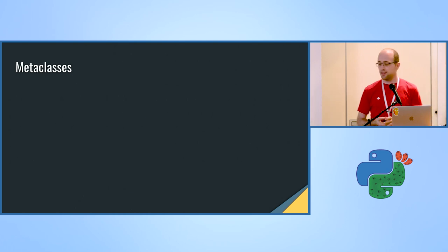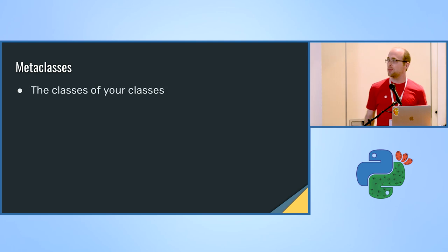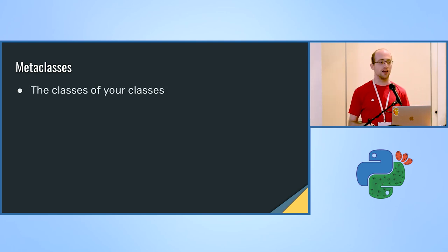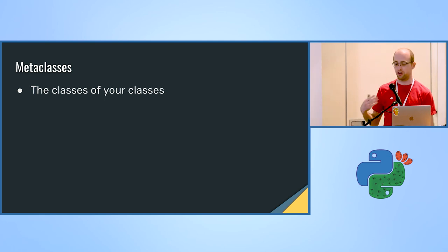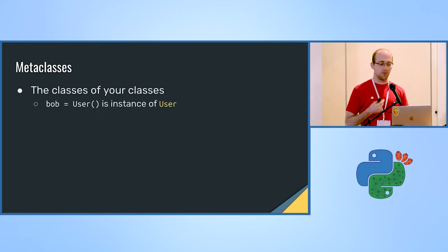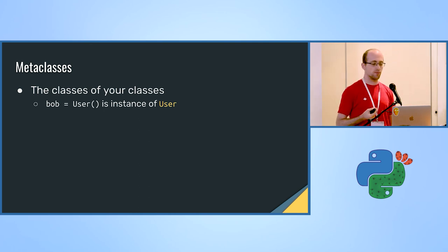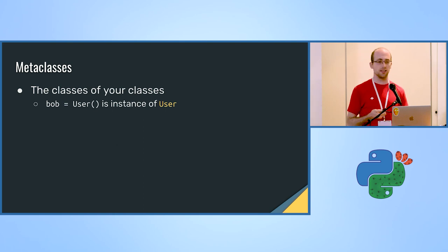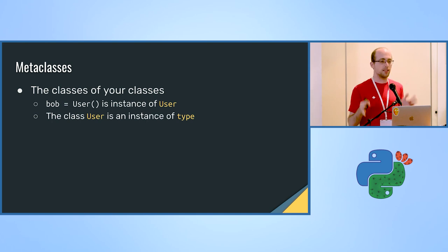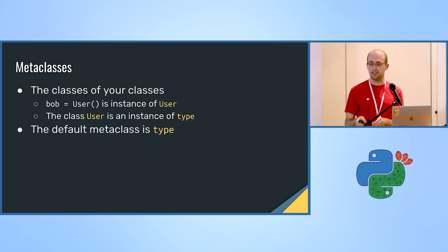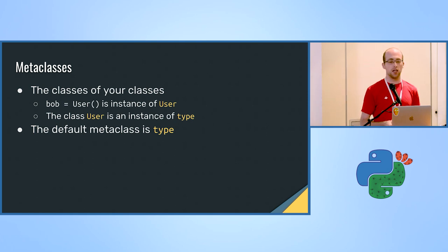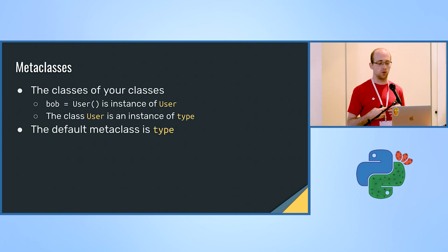No Python lecture can be complete without metaclasses, and we actually do need them to achieve our goal. Metaclasses should be thought of as the classes of your classes. If bob equals UserConstruct is an instance of the class User, then the class User is also an object — an instance of a different class. The class User by itself is an instance of the class called 'type'. So the default metaclass — the default class of your classes — is 'type'. Like every other class in Python, you can construct custom instances and do quite some fancy things.